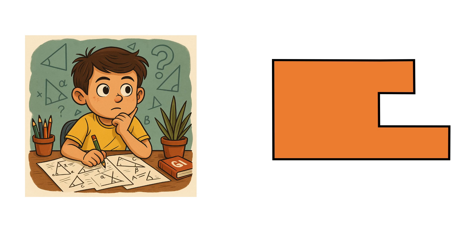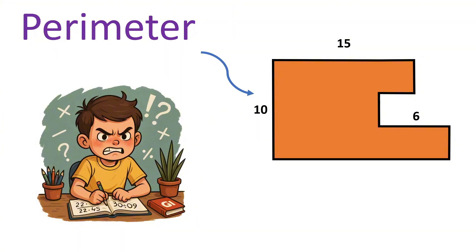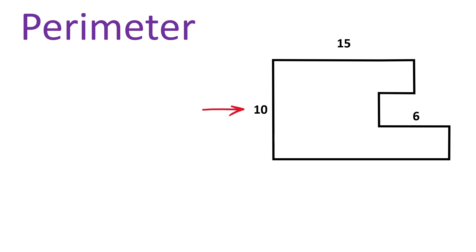Today we have this seemingly impossible question to solve. Our job is to find the perimeter of this polygon, but the catch is that they have given you the length of only these three sides. This vertical length is 10 units.